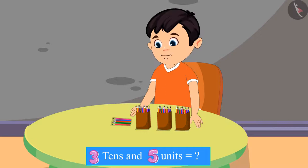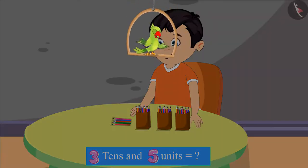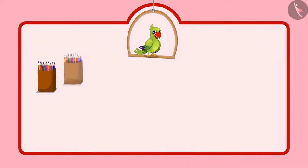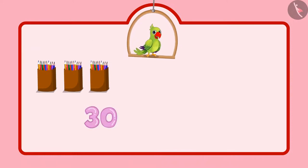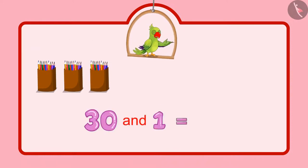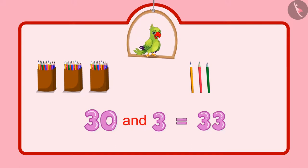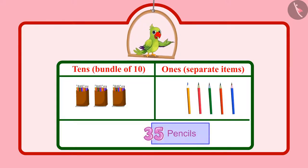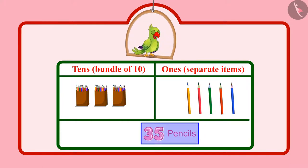So 5 units more. Children, can you tell me how many pencils Chotu has now? Let us see. Chotu had 30 pencils, followed by 31, 32, 33, 34, 35. So Chotu has 35 pencils in total.